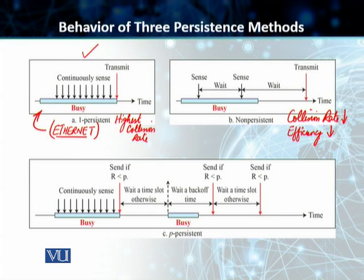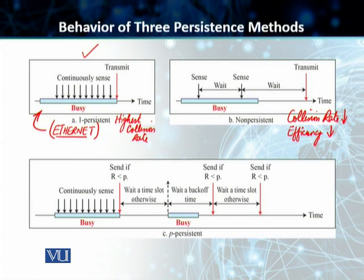The last method is P-persistent, used when we have a slot duration equal to or greater than the maximum propagation time. This approach combines the advantages of both 1-persistent and non-persistent techniques. If the line is idle, it transmits; if the line is busy, it acts as though a collision has already occurred and uses the back-off procedure. That back-off procedure is the main trait that makes P-persistent a better choice among the persistence methods.